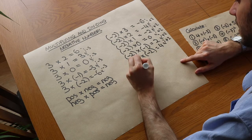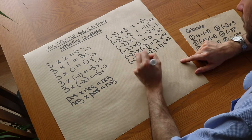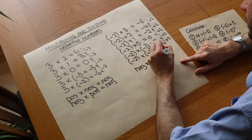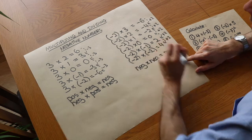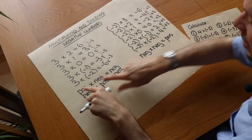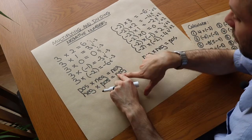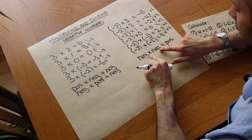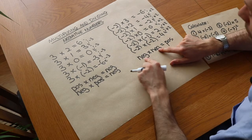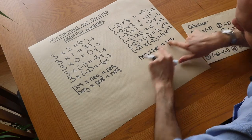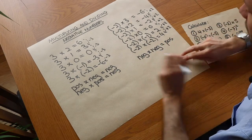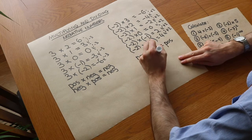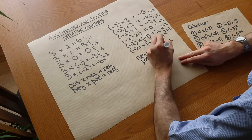So we have: negative times negative is positive. The way I remember it is that if the signs are different, you end up with negative. If the signs are the same — both negative or both positive — then you end up with positive. Clearly positive times positive would also be positive.